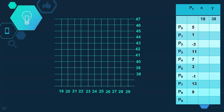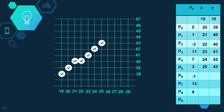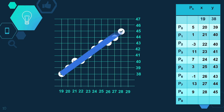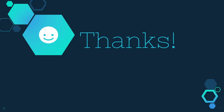Let's look at all the plotted points. Starting with (19, 38), then (20, 39), (21, 40), (22, 40), (23, 41), (24, 42), (25, 43), (26, 43), (27, 44), and (28, 45). This is how we draw a line using Bresenham's line drawing algorithm by plotting all these points. I hope you got this concept — feel free to ask in the comments below. Thank you very much.